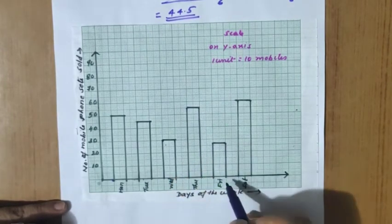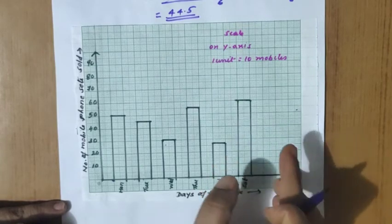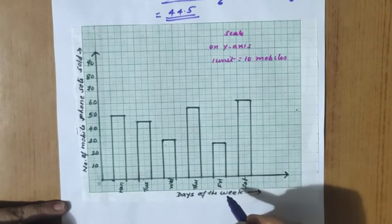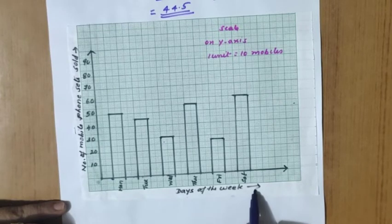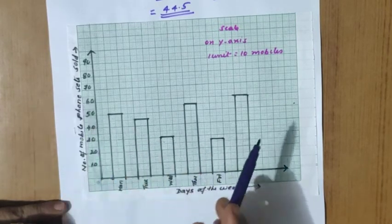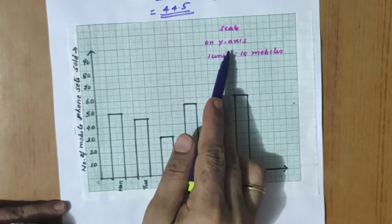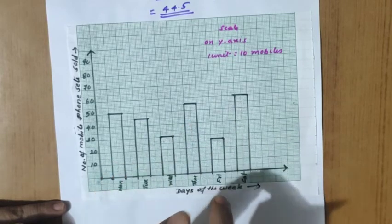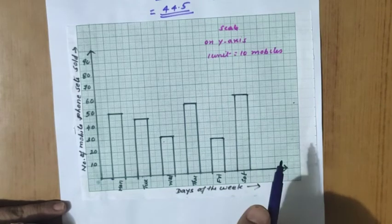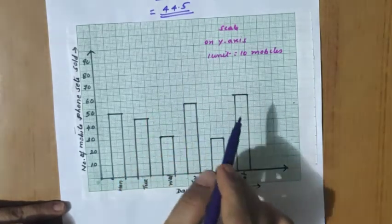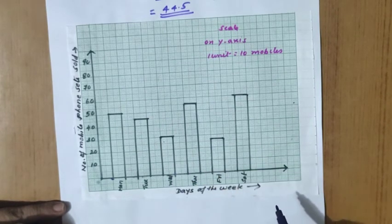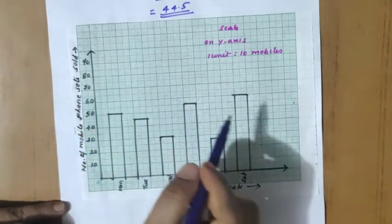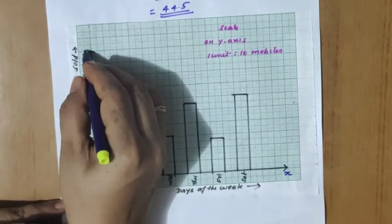The bar graph shows sales from Monday to Saturday: 50, 45, 30, 55, 27, and 60 mobile phones respectively. Don't forget to label the graph - x-axis: days of the week; y-axis: number of mobile phones sold. The scale on the y-axis is one unit equals 10 mobiles. Also mark the x and y axes clearly.